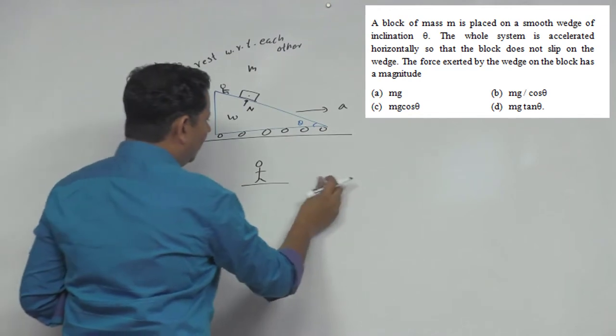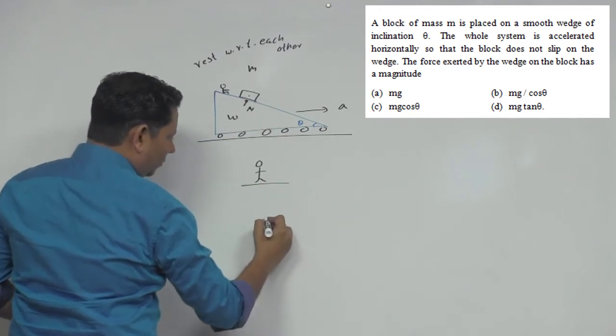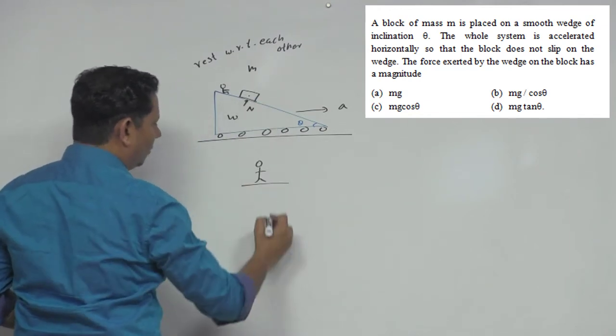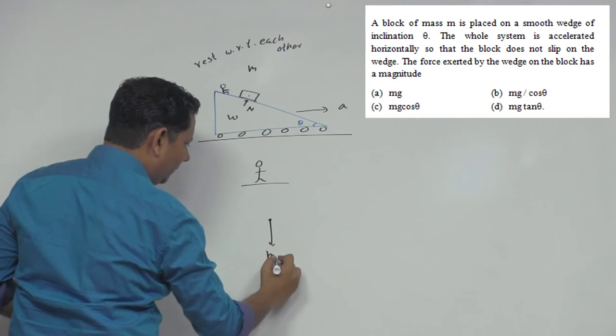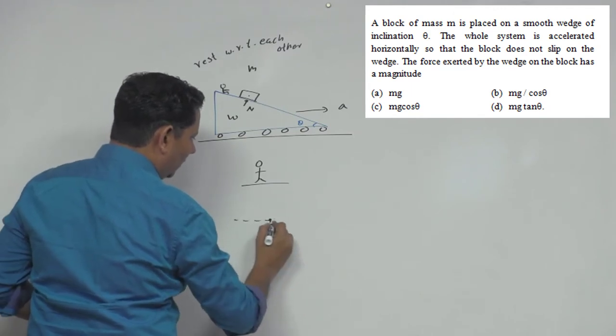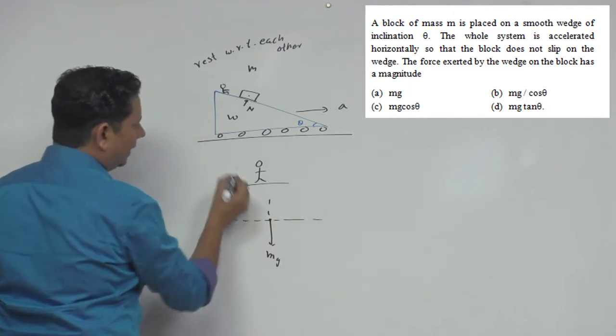If we look at the free body diagram, this block has Mg acting downward. We'll consider the horizontal direction and vertical direction.